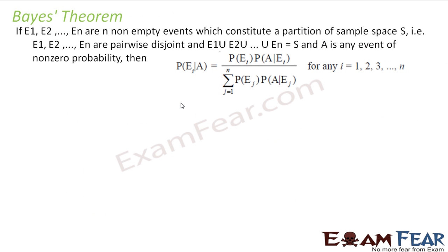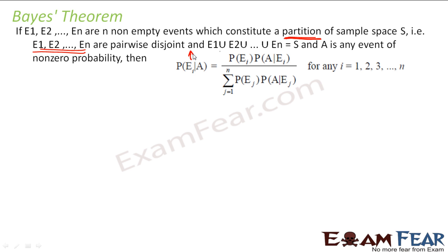So I will take you to the Bayes' theorem. This theorem uses the partition of sample space concept which we have learnt in the past slides. We partition the sample space into events that are all pairwise disjoint and exhaustive. Then, if you have to find the probability of event E_i given event A, it is nothing but: probability of E_i multiplied by probability of A given E_i, divided by probability of A.